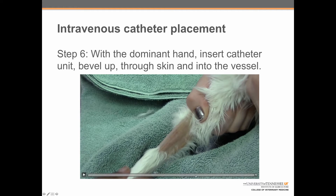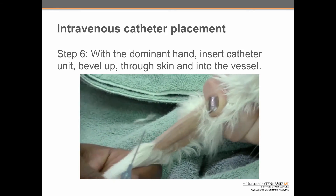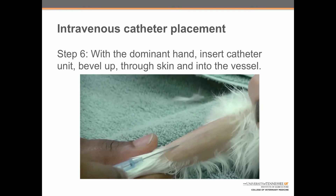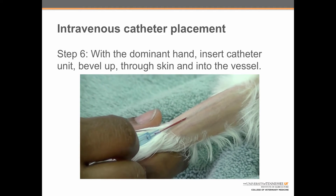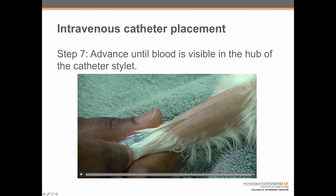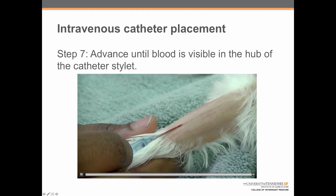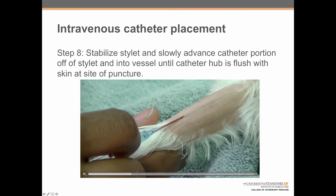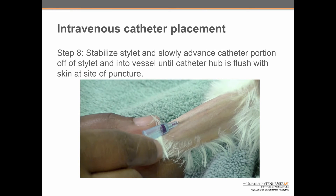Step 6: now from the other side of the cat, you can see the vessel clearly. With the dominant hand, she's going to insert the catheter unit bevel side up through the skin and into the vessel. She stabilizes the leg with her non-dominant hand, using her thumb to stabilize the vessel, and gently advances the catheter at about a 10-degree angle through the skin and into the vessel. Once she's done that, you can appreciate the flash of blood that came up the catheter very quickly, and she waits until that blood fills the hub of the catheter stylet.